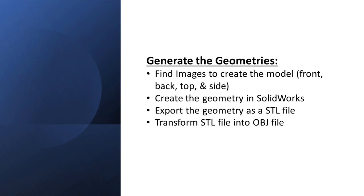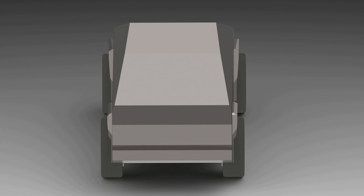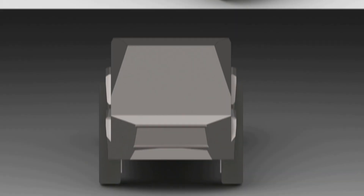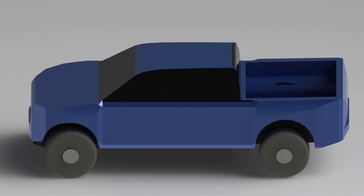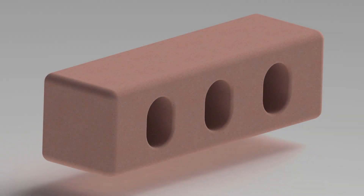To create the geometry, I found images online for each vehicle, imported these images into SOLIDWORKS, and created the model from these images. I then exported the geometry as an STL, ensuring the scaling was set to 1 meter and the triangulation was set to fine. I had trouble getting OpenFOAM to read the STL files, so I converted them to OBJ files using an online converter linked below. Here's the geometry I created for the Cybertruck, the F-150, and finally the brick. They have all been normalized to have approximately the same cross-sectional area.